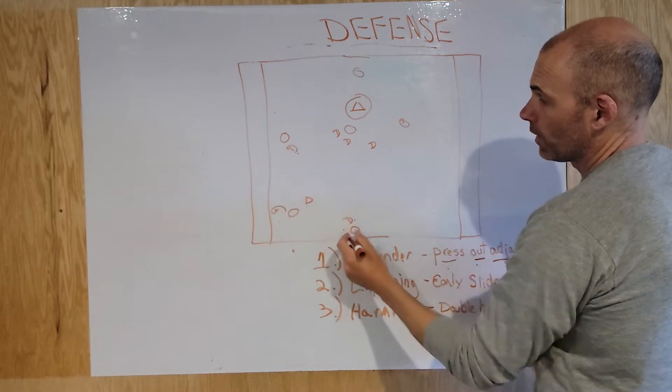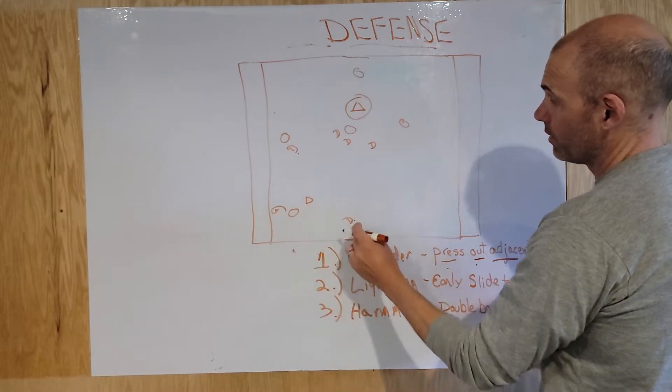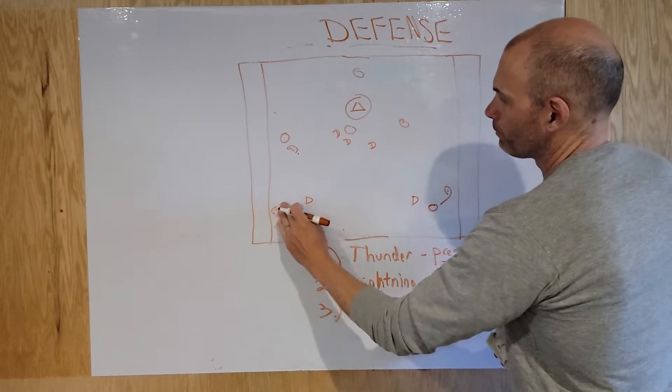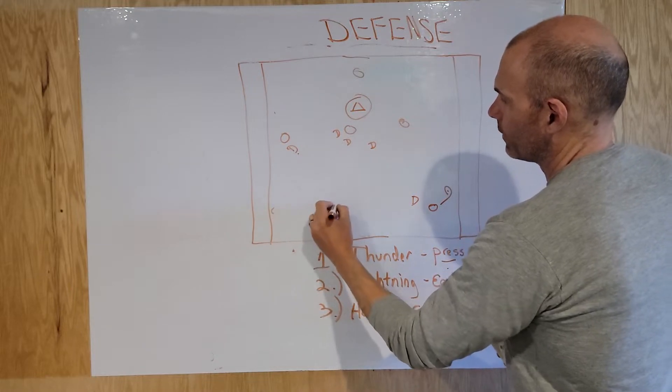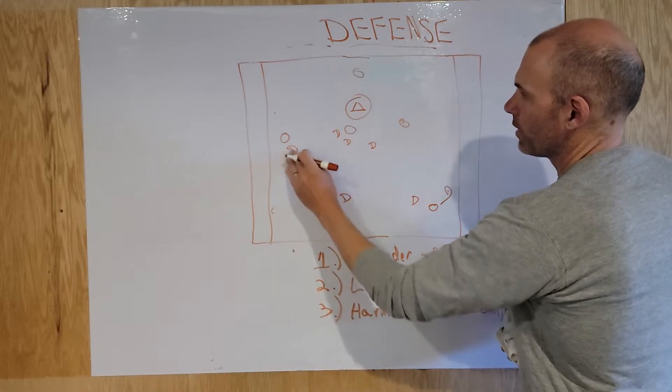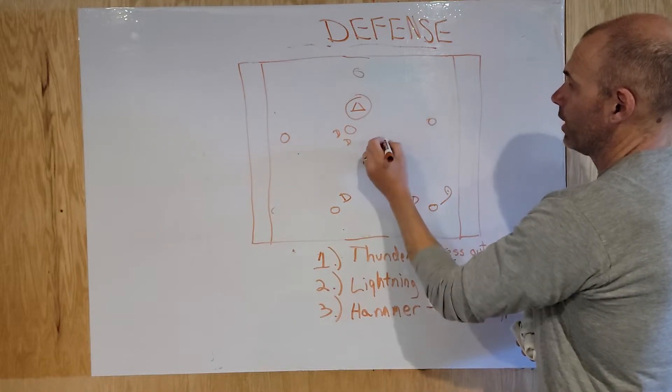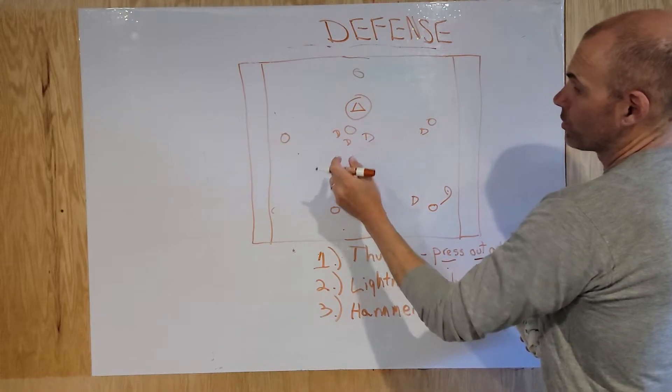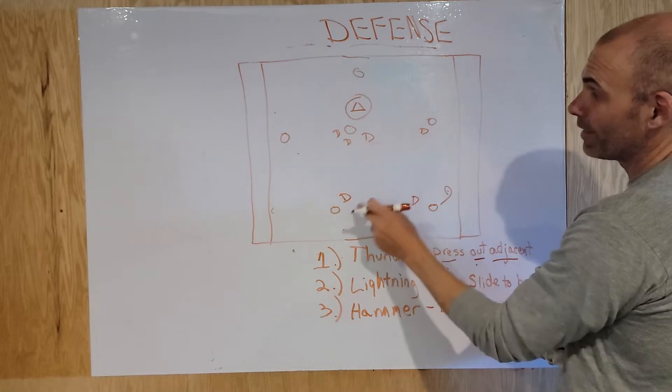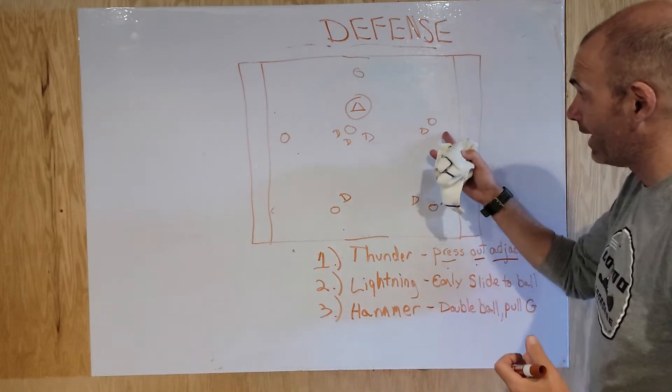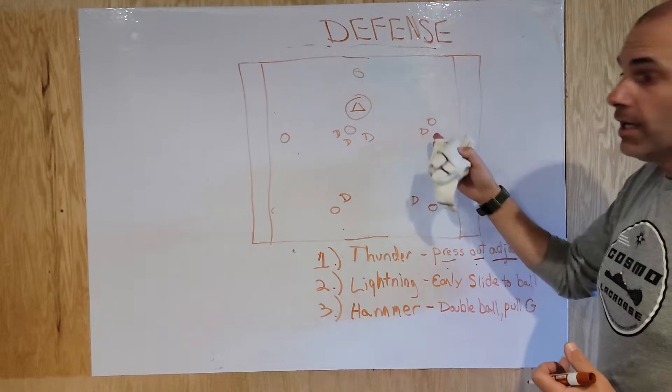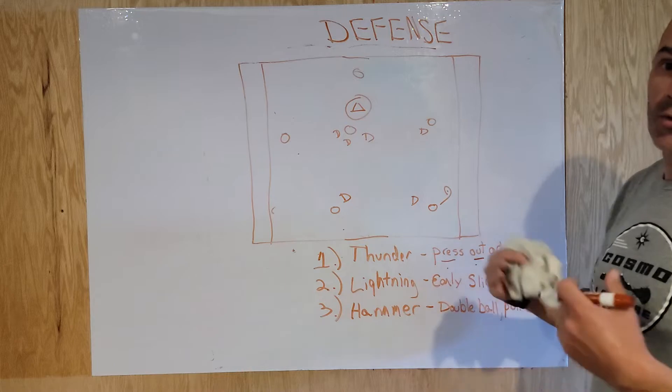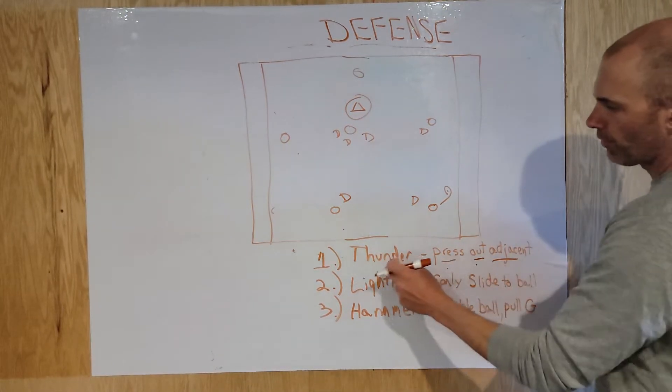So we're going to press out adjacent. Notice how our defensemen are right now up on their guys. The other three are right in the hole here, not worrying about the guy that's 40 yards away from the ball. Covering the crease obviously, but notice how they're packed in. Should there be a breakdown, we got help. But this adjacent, we're going to press out adjacent. And it doesn't matter where it is. So there's our thunder call.